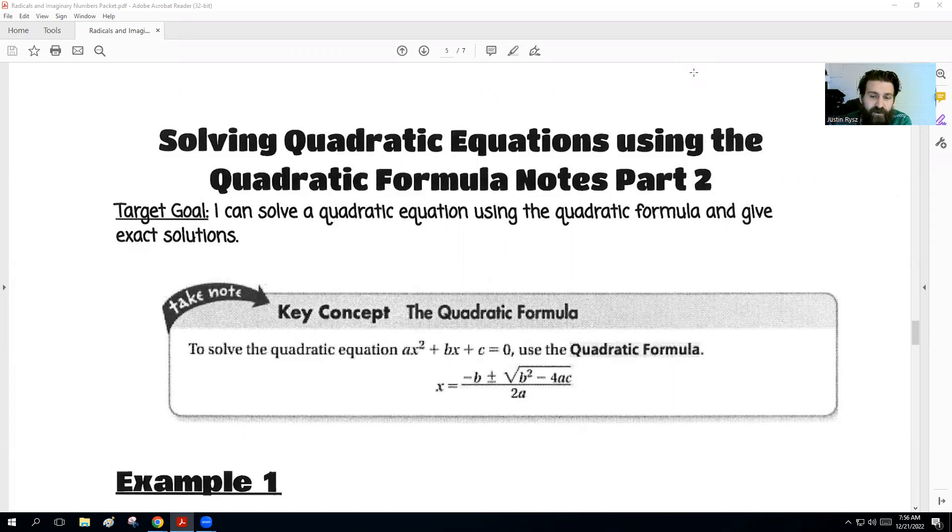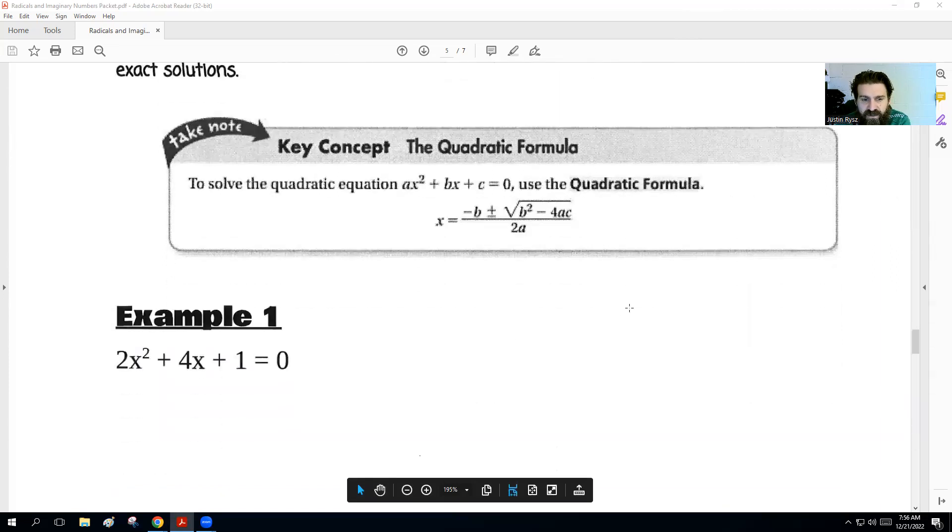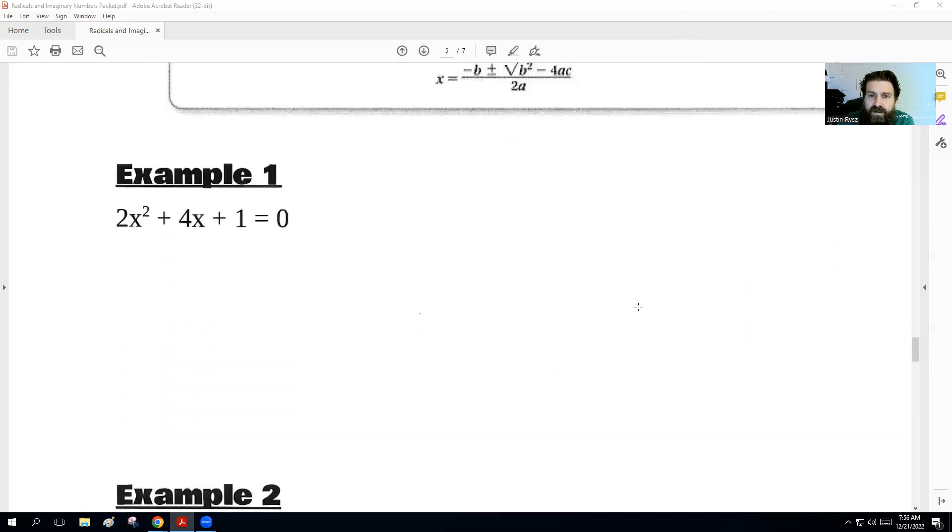We're still going to use the same formula of x equals negative b plus or minus the square root of b squared minus 4ac all over 2a. But when we get to the square root, we are not going to just get a decimal. We're going to break it down and then simplify from what we can. So let's jump into this since this is something we've done before.